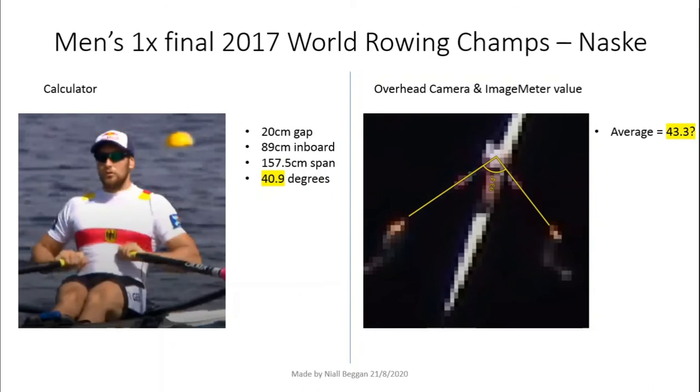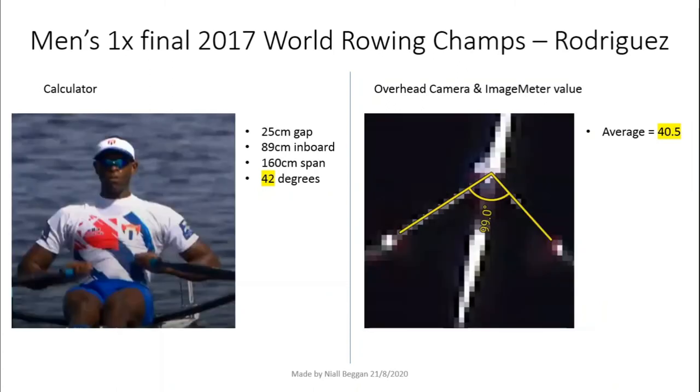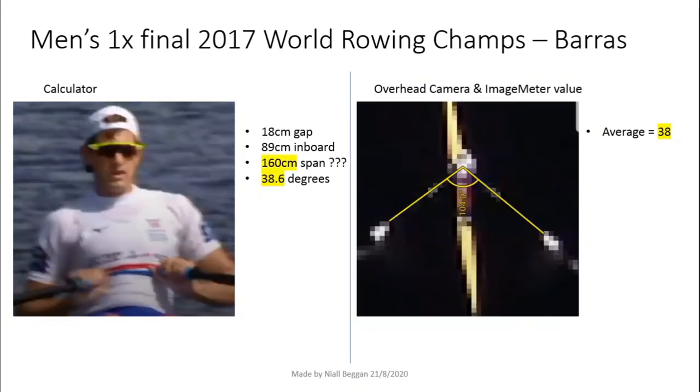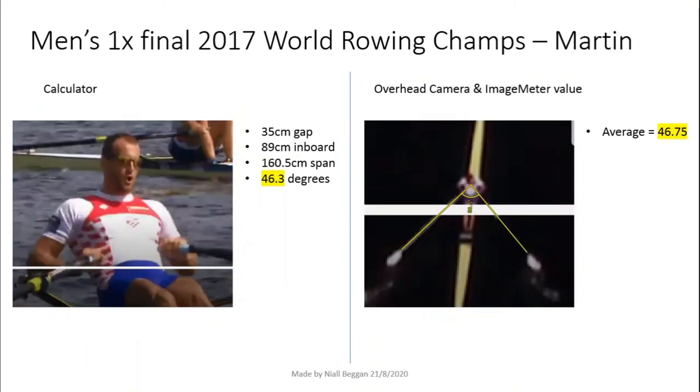Looking at Naska, there is a difference between the two methods. I think this is because the drone is not directly overhead, so the angle measured using the app is not correct. Same situation for Rodriguez. Looking at Barris, he had a smaller finish angle than the other scullers. This is due to a narrower finish, not due to his rigging. And finally, Demir Martin. Martin had an enormous finish angle of over 46 degrees. He is a really big outlier, but he makes it work.